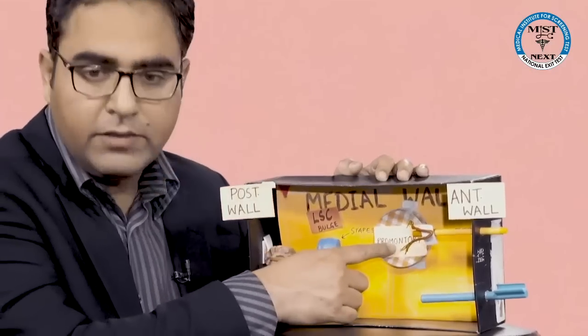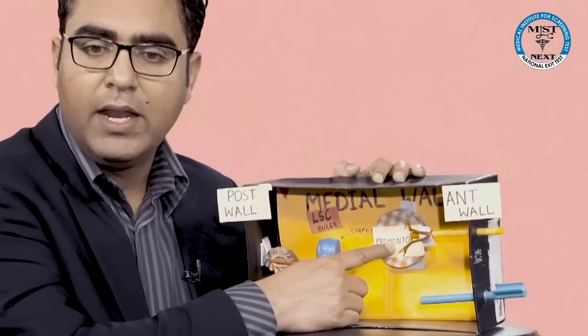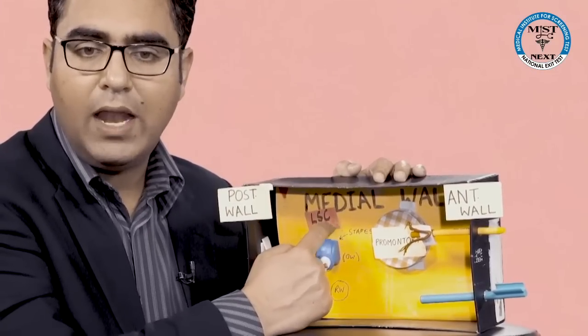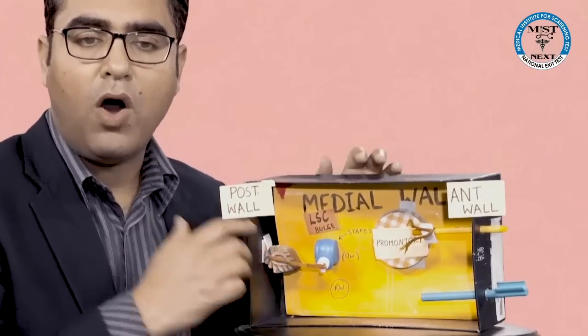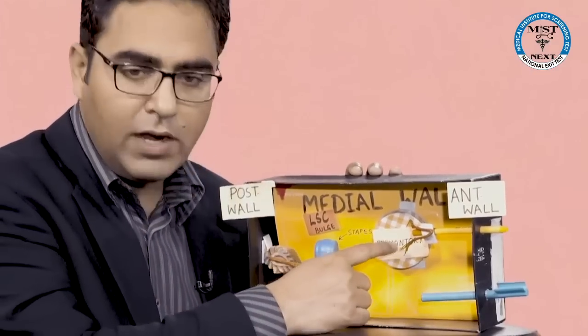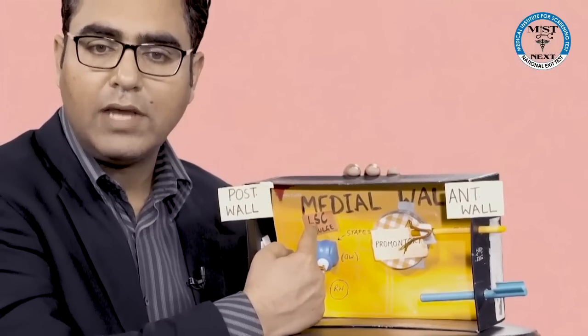To show off, the inner ear creates certain projections on the medial wall of the middle ear. Look at this one — this projection is the promontory. Promontory is the projection of the basal turn of the cochlea on the medial wall of the middle ear. The second projection over here is called the LSC bulge, which is the lateral semi-circular canal bulge. So the inner ear makes two projections: number one is the promontory (basal turn of cochlea) and number two is the lateral semi-circular canal bulge.